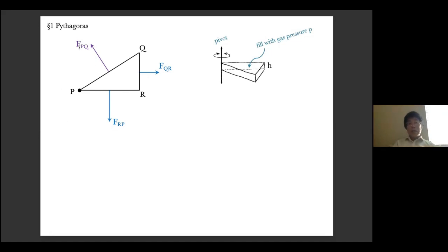It's apparent from the picture that F of PQ tends to rotate the box counterclockwise, whereas the other two forces conspire to rotate the box clockwise. However, there is no such thing as a perpetual motion machine. So you cannot set the box rotating just by filling it with gas. That's not going to happen. Therefore, the torques must balance.